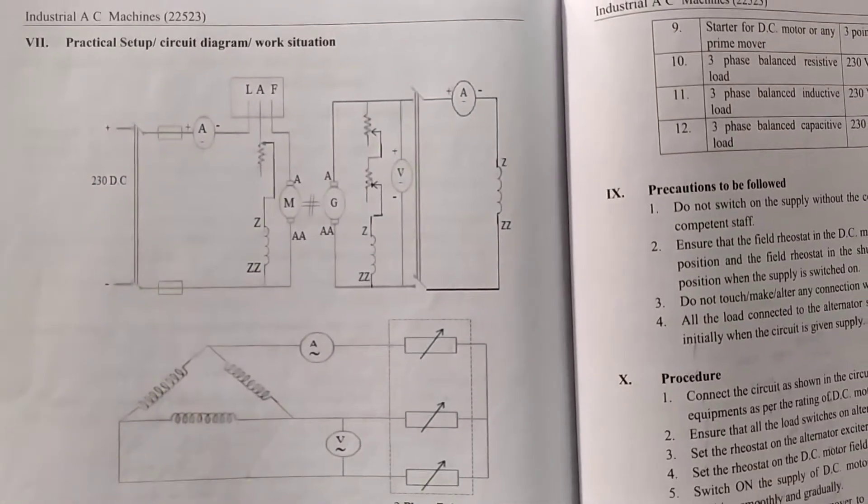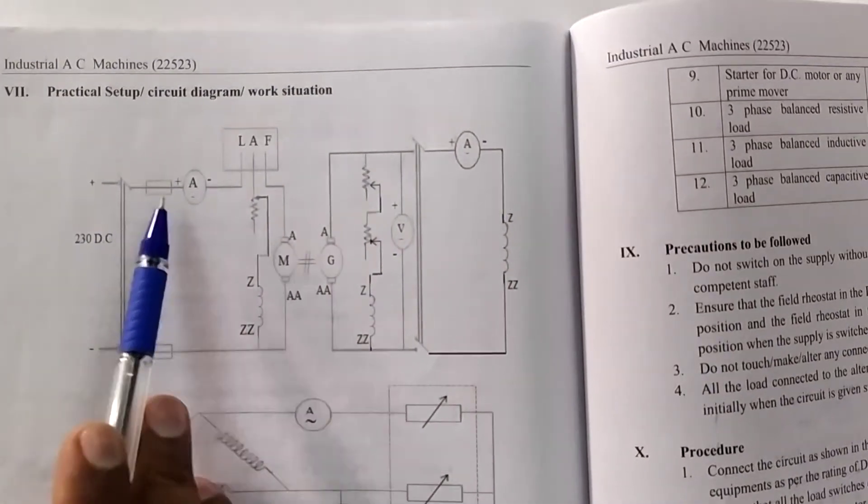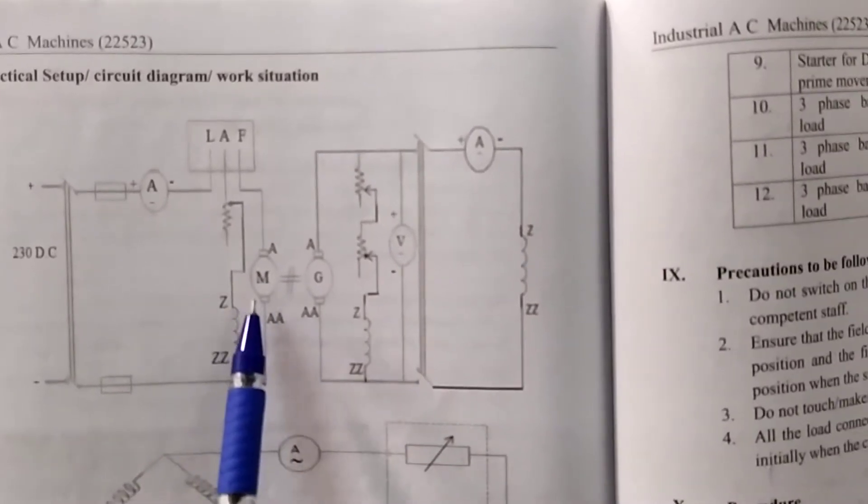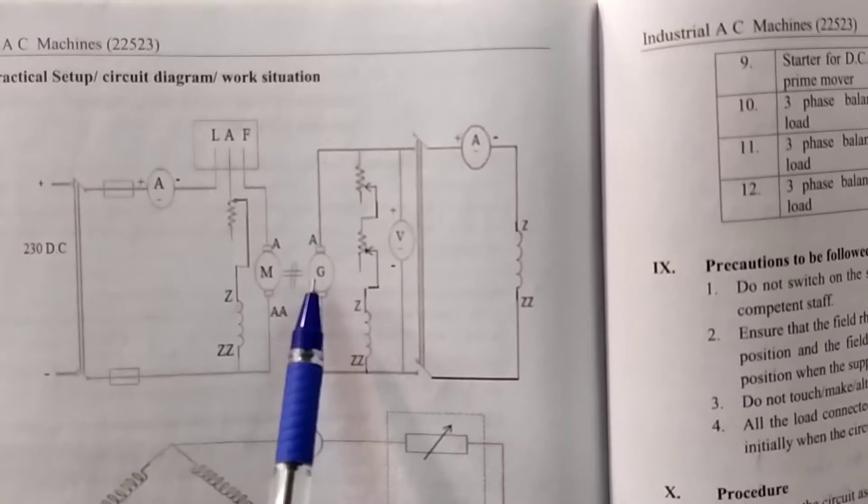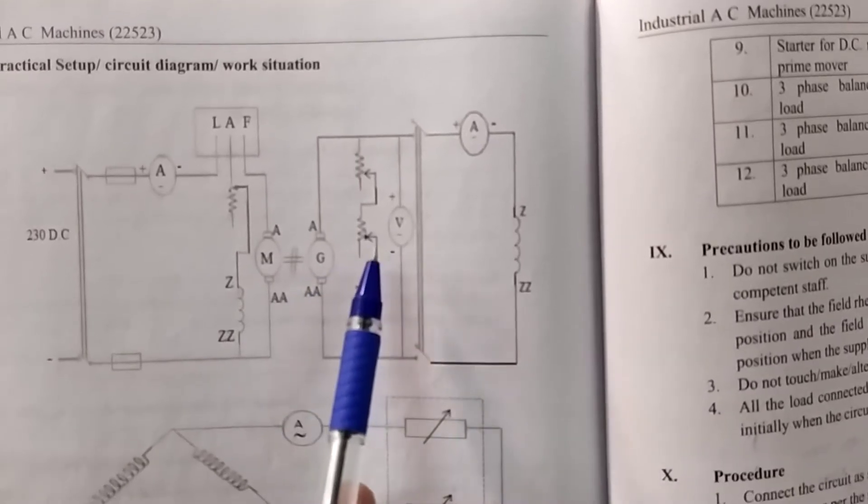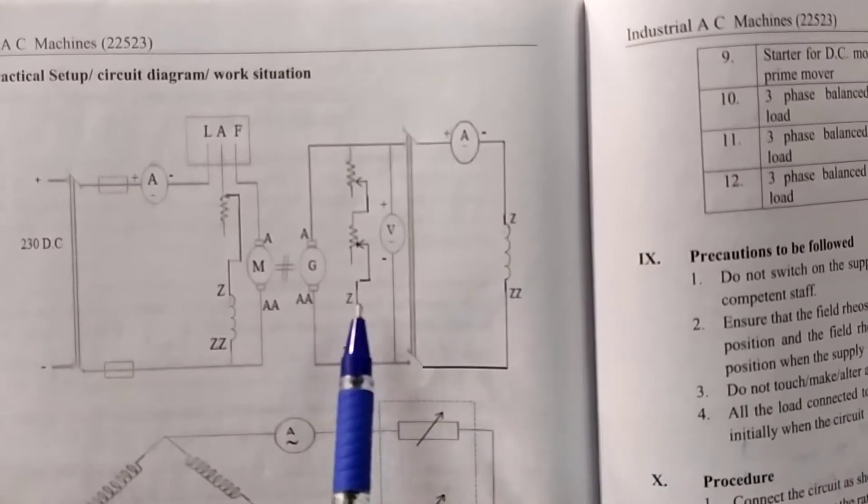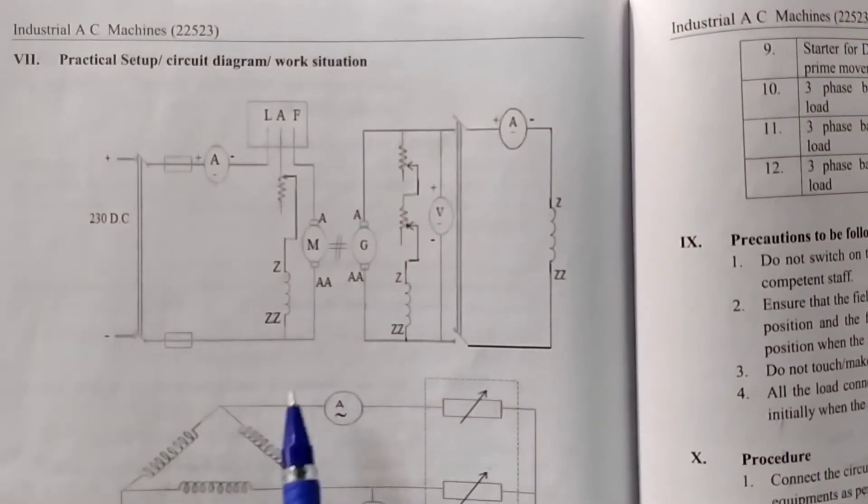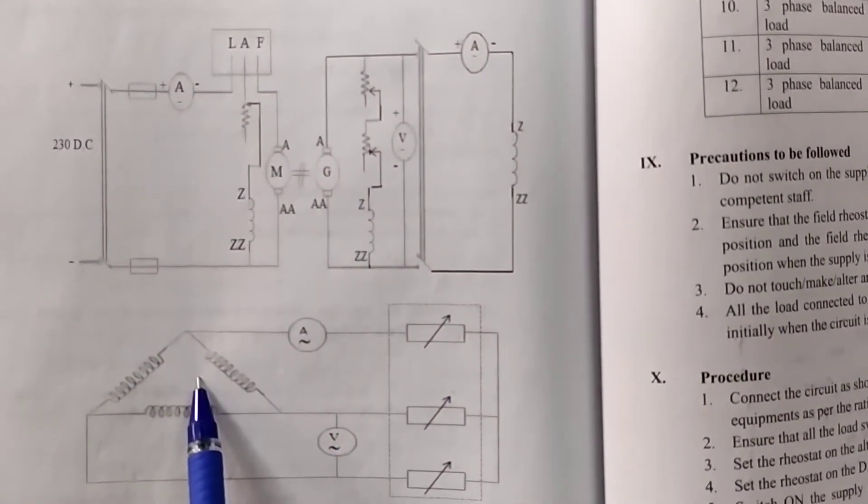The circuit diagram is shown here. Bipolar DC 230 volt DC is connected to DC shunt motor. Here DC shunt motor is coupled to alternator. Alternator is excited by separately excitation, field excitation and accordingly the armature star connected.